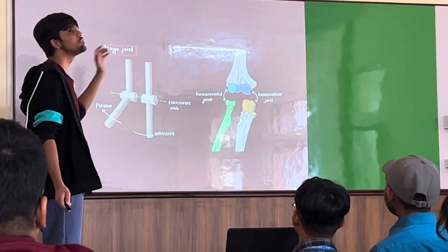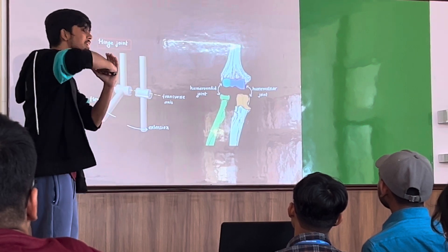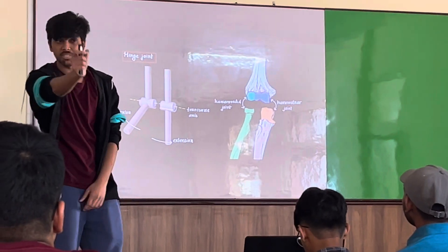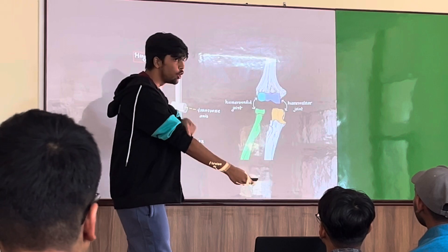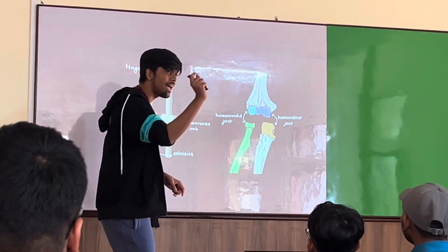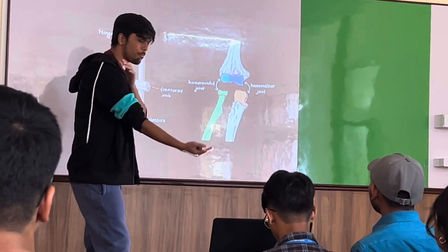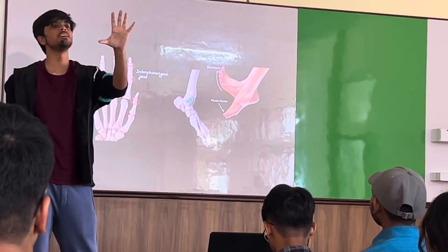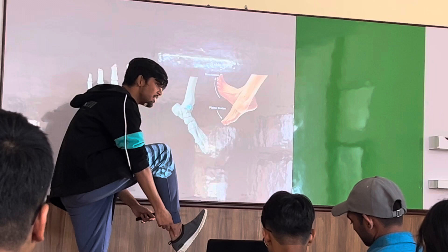Second, the hinge joint. It looks like a pulley, where the convex part articulates with the concave part and it moves about a transverse axis, so the only movements possible are flexion or extension. Examples include the humeroradial joint, the humeroulnar joint — imagine an axis passing transversely through these joints — the interphalangeal joints (flexion, extension), and your ankle joint (flexion, extension).